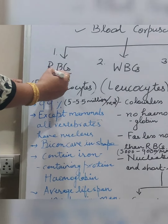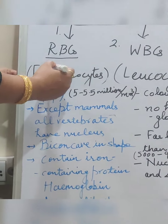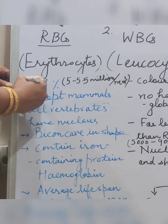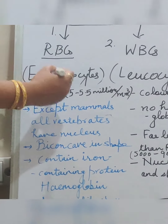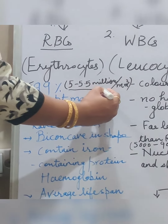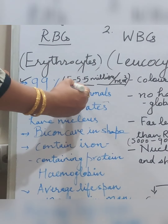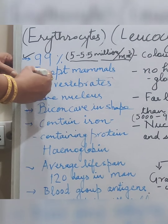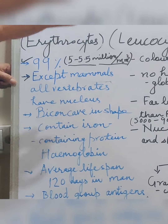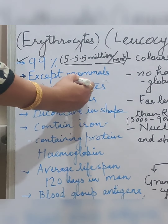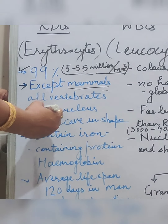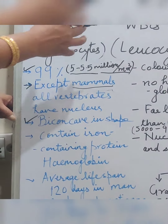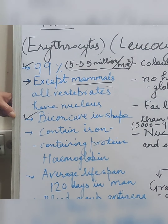Red blood cells, as the name suggests, contain the red color component hemoglobin, which is an iron-containing compound. They constitute about 99% of total blood cells. In mammals their number varies from 5 to 5.5 million per cubic mm in males, while in females it is 4.4 to 4.5 million. Except in mammals, in all other vertebrates RBCs are nucleated — they have a nucleus. But in mammals there is no nucleus.